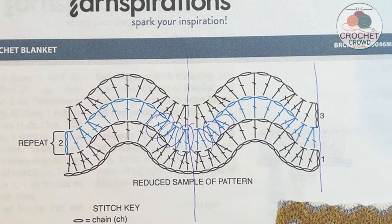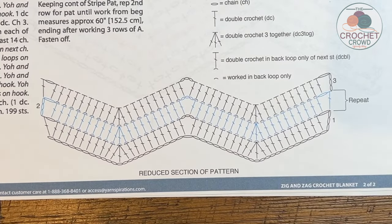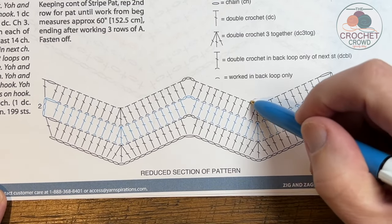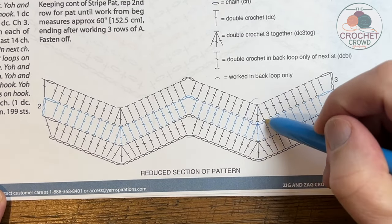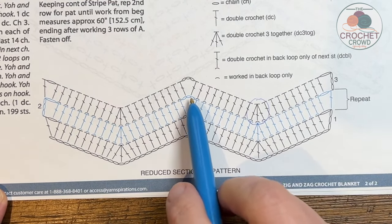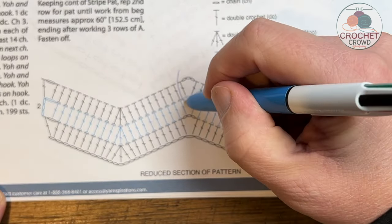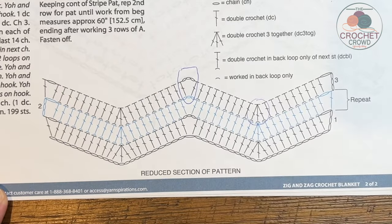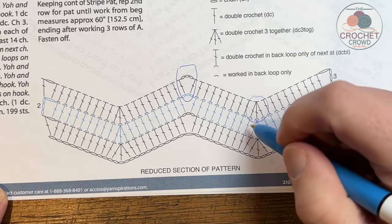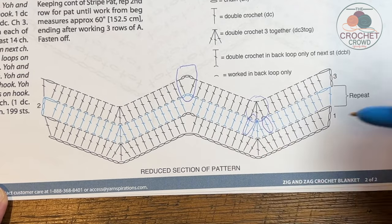Let's take a look at another pattern. This pattern is much easier to read. When you're looking at the valley, we see there's a three-together double crochet right here in the valley, and at the peak here we see that there is an increase right here.